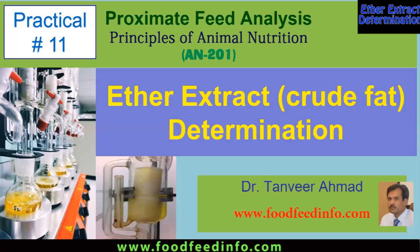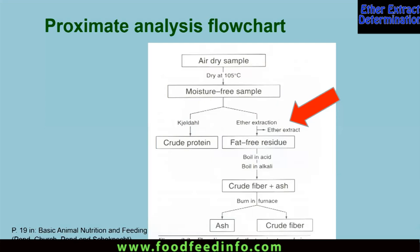This is Practical 11: proximate analysis of feed. In this practical we will perform ether extract determination. Looking at the flow chart, we did dry matter determination in the previous experiment — we determined the moisture or dry matter content of a sample. Now the moisture-free sample available to us will be run for the determination of crude protein and also for the determination of ether extract or crude fat.